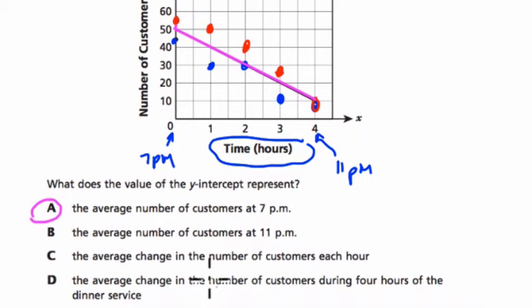And the other choices - the average number of customers at 11 p.m. would be the x-intercept. The average change would be the slope. The average change in the number of customers during the four hours of dinner service is also the slope. Slope on a small scale or slope on a larger scale is just the same rate with different numbers.